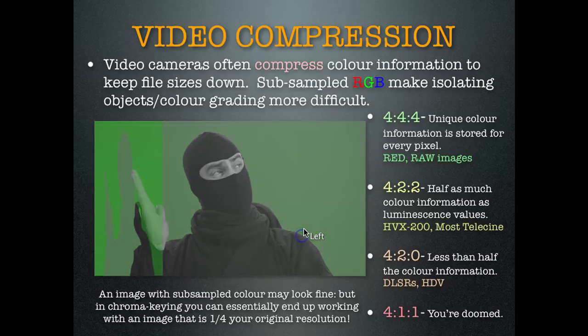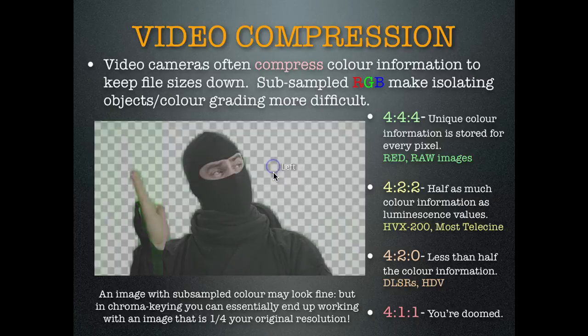The best image you could possibly get would be 4:4:4. When you get down to it, some cameras have less color information — they look good but they're sub-sampling the color. That means you're dealing with potentially one-fourth of the image when you're doing a chroma key. This is an example of what it would look like doing, say, mini DV — that's why you get those crazy chroma edges on some things.